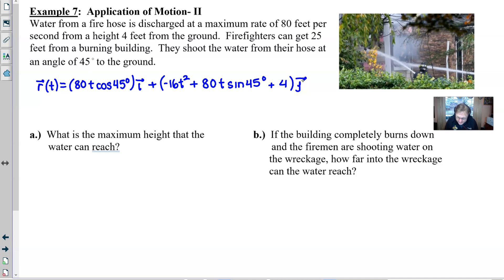So now we just look at part a, what is the maximum height that the water can reach? So you're talking about the water being shot in a sort of parabolic path. And the height that it's going to reach is always going to be determined by this y of t. And so we're going to go ahead and find its derivative. We're going to take the derivative of the y component.